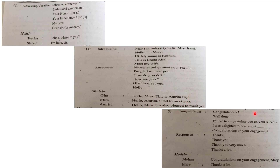The sixth type is the congratulating type. Congratulations. Well done. I'd like to congratulate you on your success. I was delighted to hear about your victory. Congratulations on your engagement. The responses are: thanks, thank you, thank you very much, thanks a lot. Example: Mohan: Congratulations on your engagement, Mary. Mary: Thanks a lot.